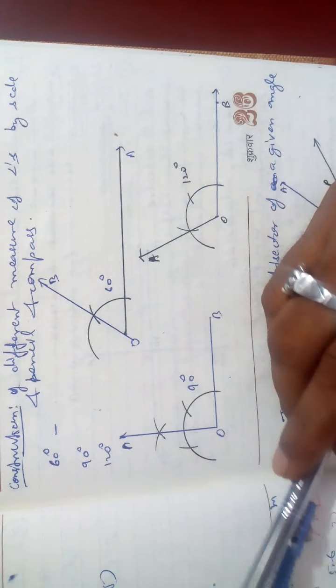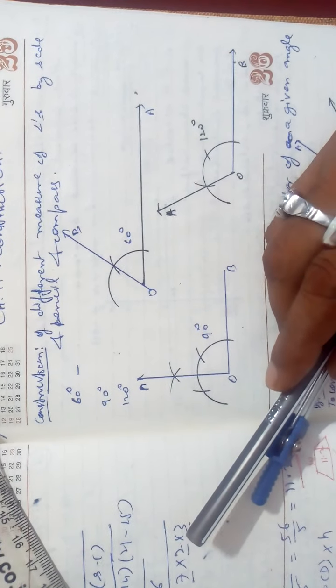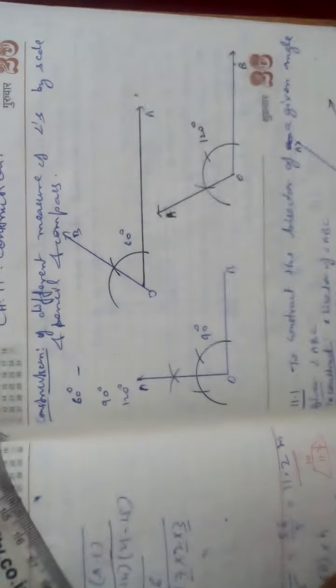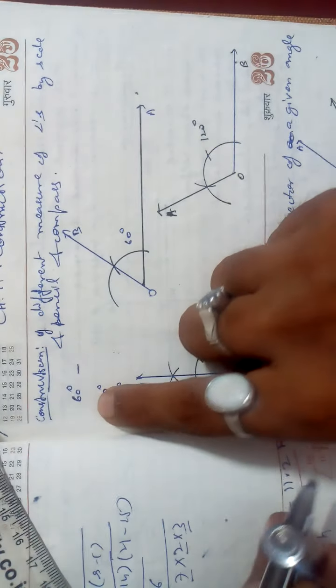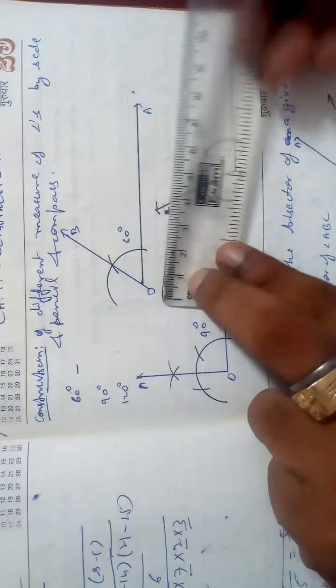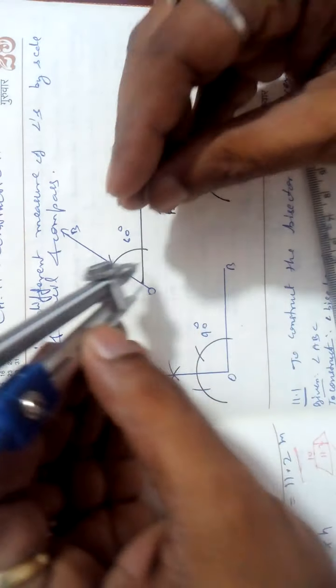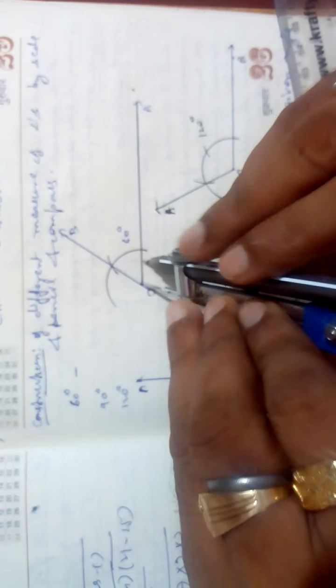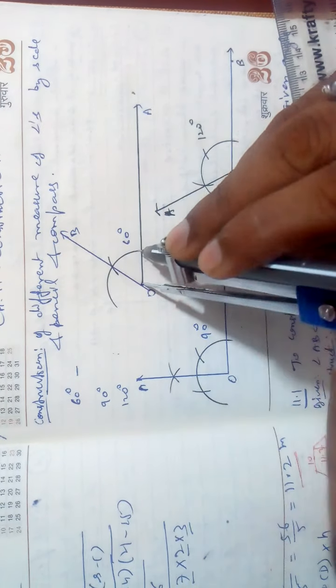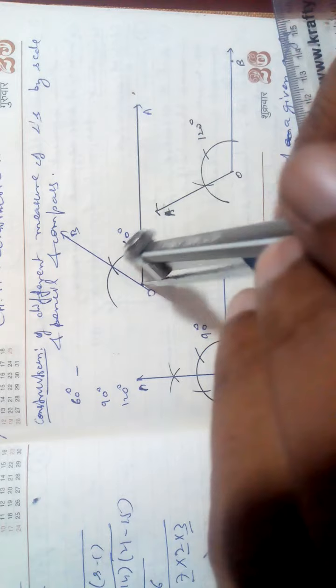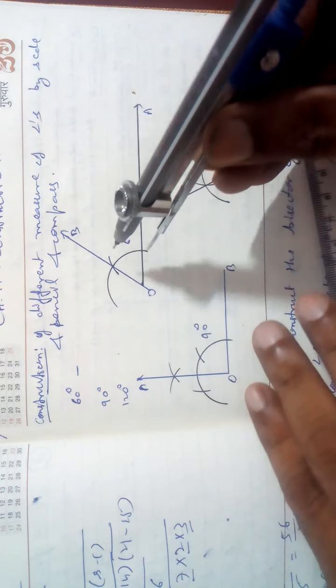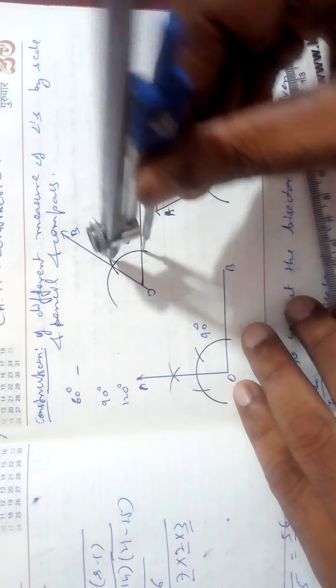In a very simple way, you will construct a simple triangle or a 60-degree angle. How will you draw the 60 degree? First of all, draw a line. Then on the line, put the compass, take any radius, and mark the arc. From the same radius, put it here and mark the arc.